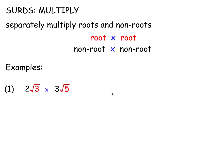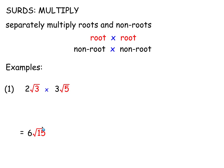Here's multiplying surds: you can multiply the 2 and the 3 to get 6, and multiply root 3 and root 5 to get root 15. Non-root times non-root, root times root — keep them separate. Similarly, 2 root 3 times 3 root 5: the 2 and 3 give 6, and root 5 times root 5 is root 25 which is 5. So you're squaring root 5, which just gives 5. That's 2 times 3 times 5 giving 30.